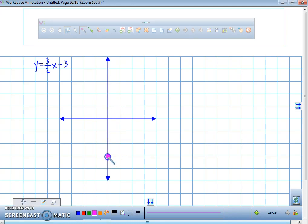And what do I have to do? I have to go up 1, 2, 3, and over 2. Up 1, 2, 3, and over 2. So now we have this line that looks like this.